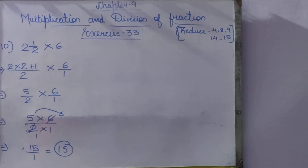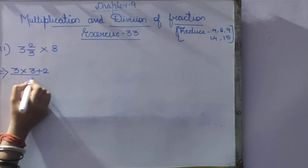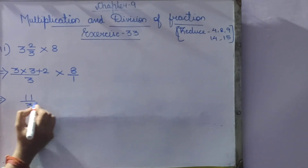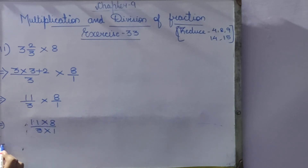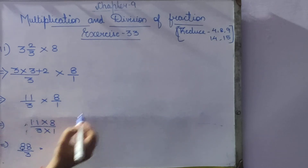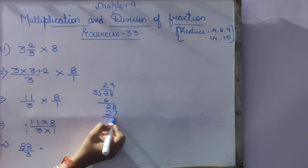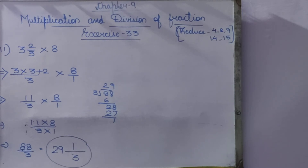Question 11: 3⅔ × 8. First convert: 3 × 3 + 2 = 11, giving 11/3 × 8/1. No simplification possible, so 11 × 8 = 88 divided by 3. Dividing: 3 twenties are 60, 28 remaining, 3 nines are 27, remainder 1. So 88/3 = 29⅓. Mark questions 12 and 13 as homework. Questions 14 and 15 are cut; question 16 is in notes. Exercise 33 is finished.